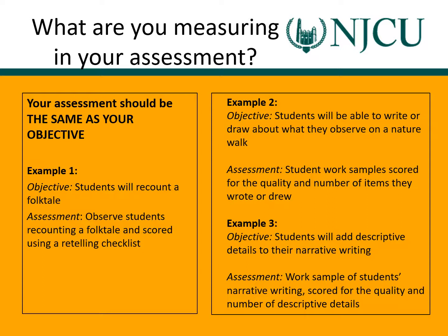Example two: students will be able to write or draw about what they observe on a nature walk. The assessment then would be student work samples scored for the quality and number of items they wrote or drew on the nature walk. Example three: students will add descriptive details to their narrative writing, and the assessment is a work sample of students' narrative writing scored for the quality and number of descriptive details. They're aligned — they're the same thing.